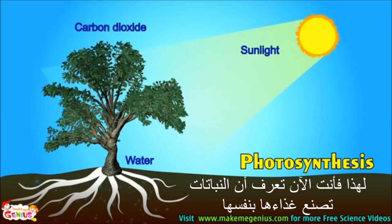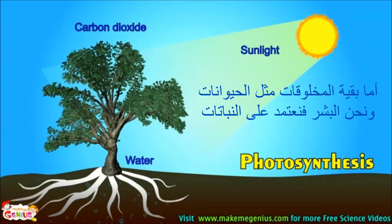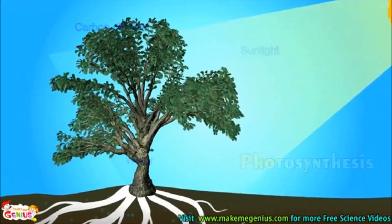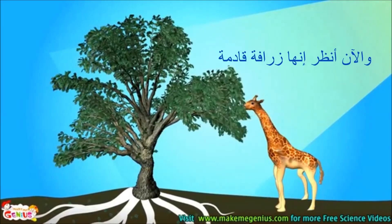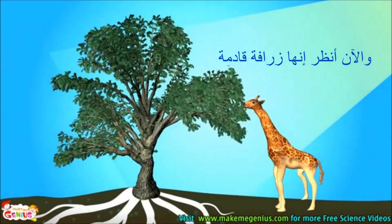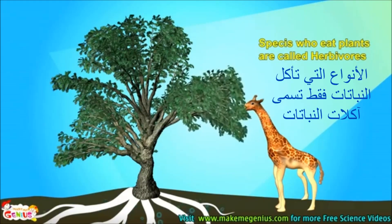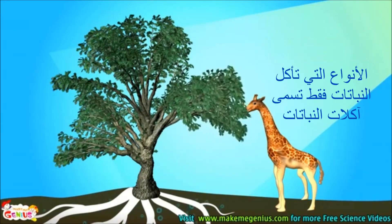So now you know plants make their own food. All other species like animals and we humans are dependent on plants. A giraffe is coming. It is eating the plant. Species who only eat plants are called herbivores.